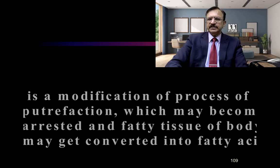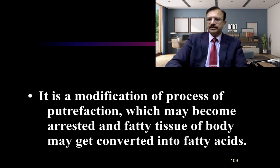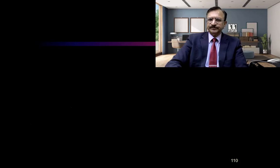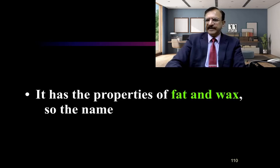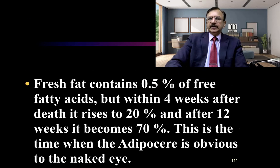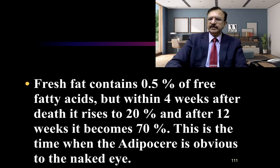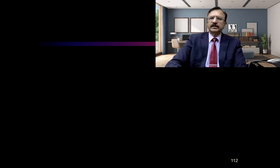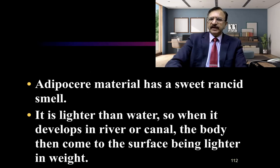Adipocere formation is a modification of the putrefaction process, in which the process becomes arrested and the fatty tissue of the body gets converted into fatty acids. It has the properties of fat and wax, hence the name adipocere — soft fat and wax. Fresh fat contains 0.5% free fatty acids, but within 4 weeks after death this rises to 20%, and after 12 weeks it becomes 70%, which is when the adipocere becomes obvious to the naked eye. Adipocere material has a sweet rancid smell and is lighter than water, so when it develops in rivers or canals the body becomes lighter and floats.